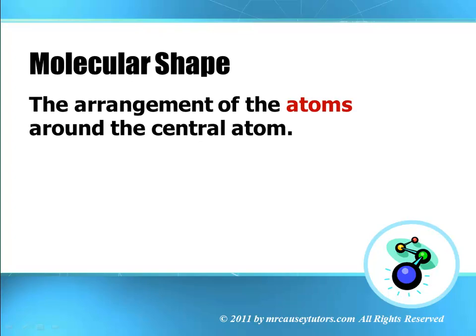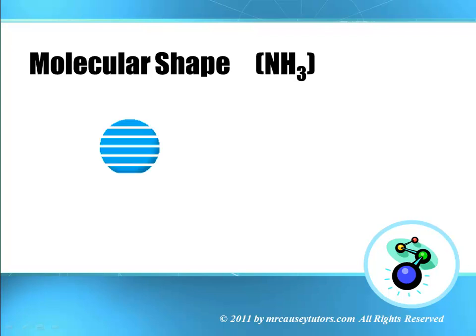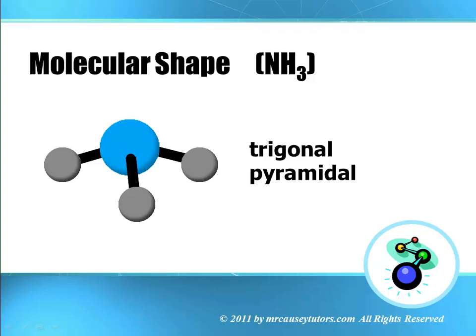The molecular shape: the arrangement of the atoms around the central atom. Bonds only. Ammonia has a molecular shape of trigonal pyramidal. Now you need to look at that. Go back and look at the other one if you need to.